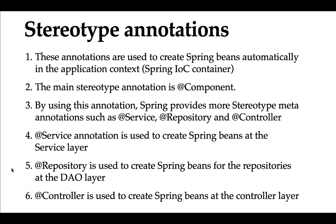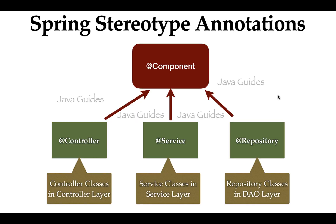The @Service annotation is used to create Spring beans at the service layer. @Repository annotation is used to create Spring beans for repositories at the DAO layer. @Controller is used to create Spring beans at the controller layer. In typical Spring-based applications, we use a three-layer architecture: controller layer, service layer, and DAO layer. So Spring provides three stereotype annotations — @Service, @Repository, and @Controller — to create Spring beans with respect to these three layers.